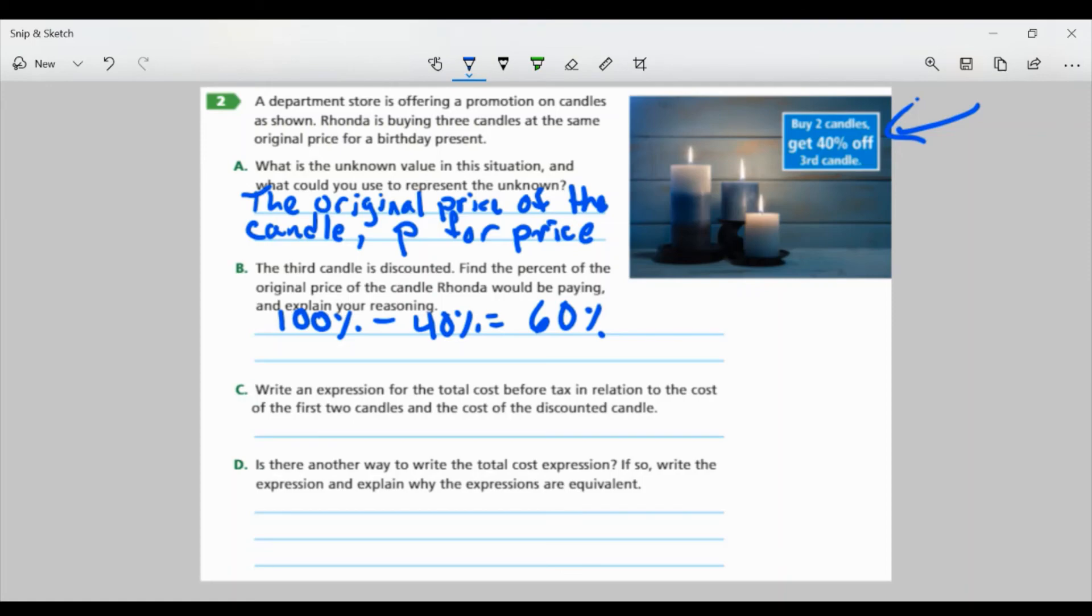Part C, write an expression for the total cost before tax in relation to the cost of the first two candles and the cost of the discounted candle. So we want to add them all together, right? There's going to be three of them. So I know I have the first one at the original price, plus the second one at the original price, plus the third one, but it's going to be at 60% of the price. And remember, we want to convert that to decimal form, which is 60 divided by 100, and that gives us the 0.60.